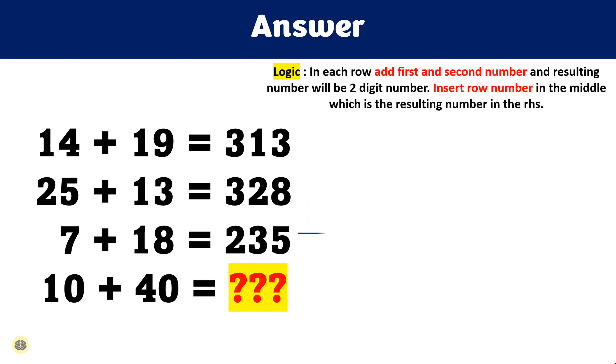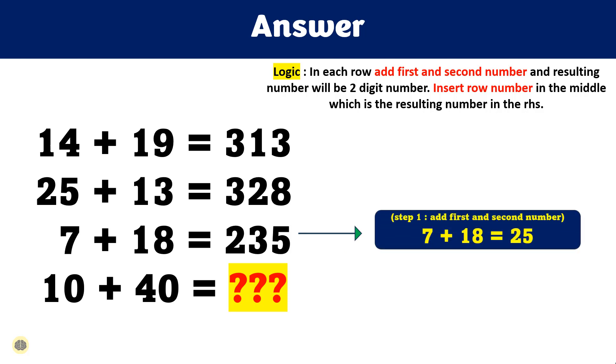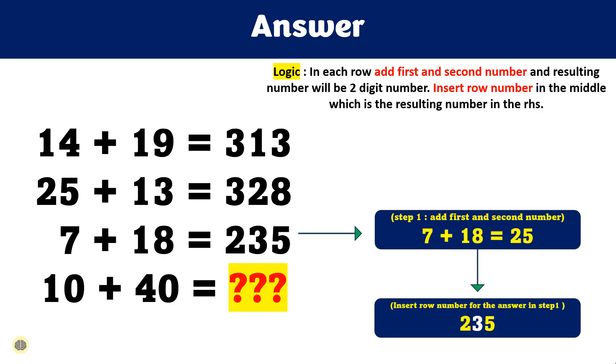Similarly in the third row, if you look at the third equation, addition of two numbers 7 and 18 will result in 25 and 3 is inserted in middle. Since this is third row, 3 is inserted between numbers.